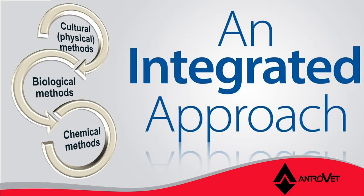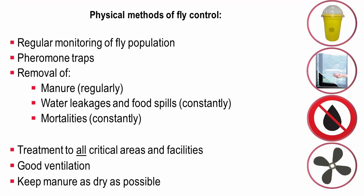At AntroVet, we believe in an integrated approach to fly control. We're going to look at the cultural method, the biological method, and the chemical method. The first is the physical method: regular monitoring of the fly population, putting out pheromone traps, regular removal of manure, addressing water leakages and feed spills, removing mortalities quickly, treatment of all critical areas and facilities, and good ventilation.